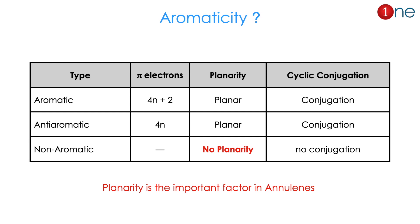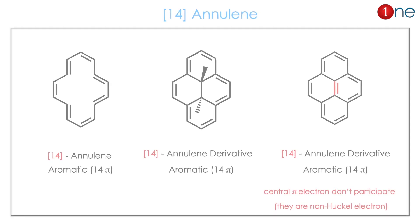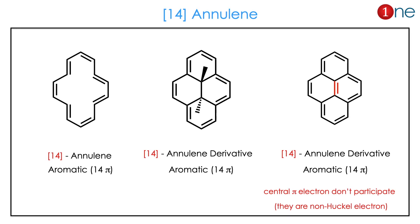Aromatic compounds follow the 4n+2 rule. Anti-aromatic compounds follow the 4n rule. Non-aromatic compounds are mostly defined by non-planarity and lack of conjugation. Our interest is solely in non-aromatic systems, because planarity is an important factor in annulenes.